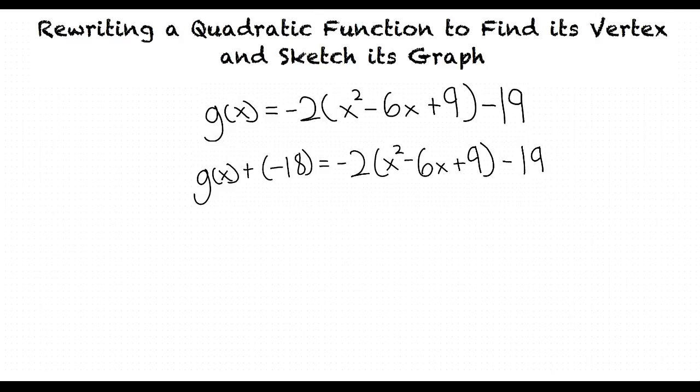From here, we add 18 to both sides, and the result is g of x equals negative 2 times x squared minus 6x plus 9 minus 19 plus 18. We simplify the right side of the equation, which results in g of x equals negative 2 times x squared minus 6x plus 9 minus 1.